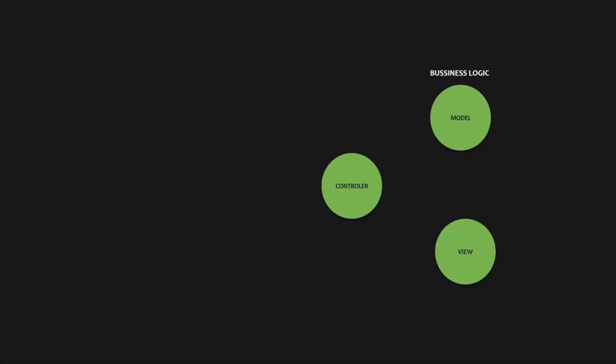Next, we have the controller layer. The controller layer is responsible for handling the application request, interacting with models and views, and sending back responses to the client. And all of that is called application logic.